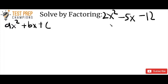So in our equation, the 2 is going to be the a term, negative 5 is going to be the b term, and negative 12 is the c term. So first of all, recognize this is a quadratic equation. Now we're going to factor it.